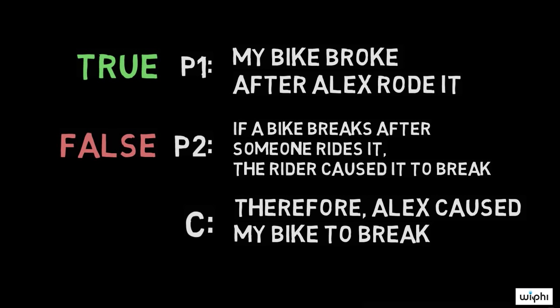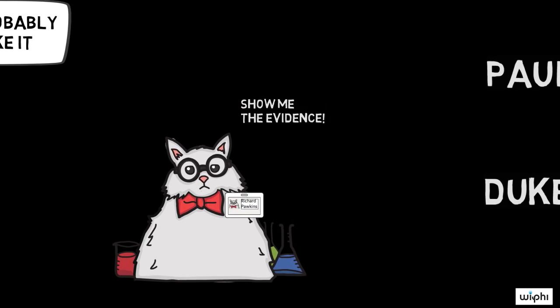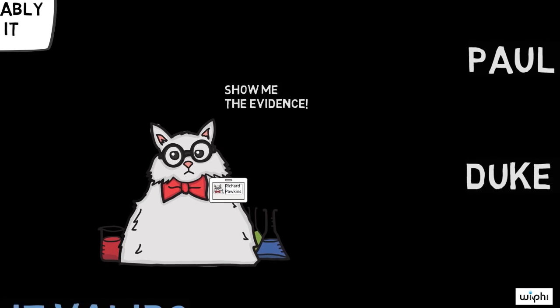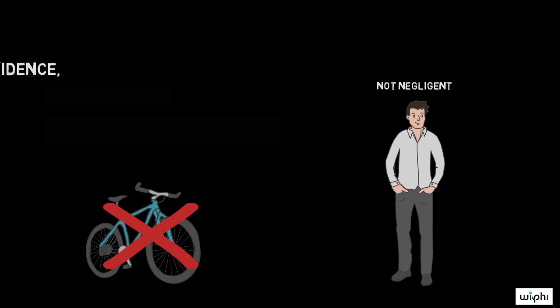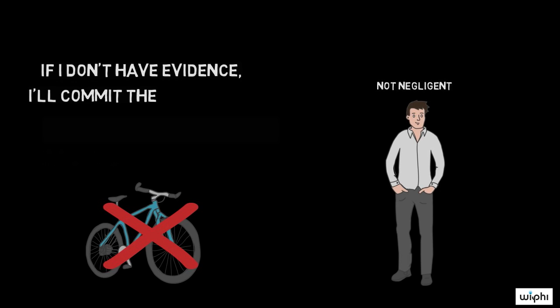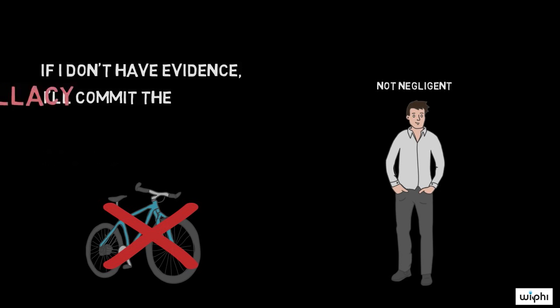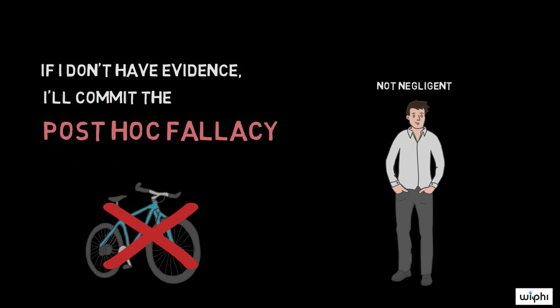Regardless of the exact argument representation I use, I need more evidence about this case for me to make my conclusion. If I don't have evidence that Alex acted negligently, I'll not have a good argument. I'll make a hasty conclusion and I'll commit the post-hoc fallacy.